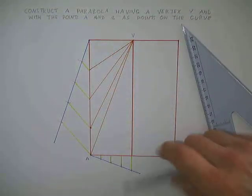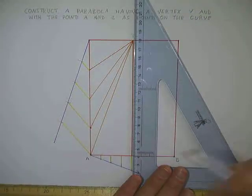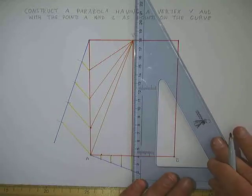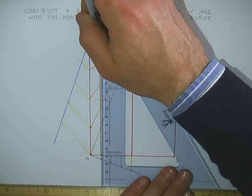Now, the division lines along the bottom, they are just projected straight up. Parallel to the axis of the parabola. So, from here, here and here.